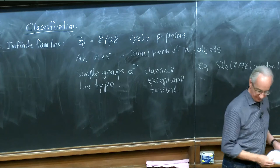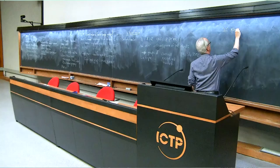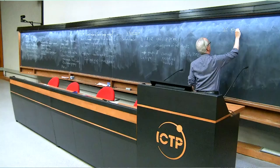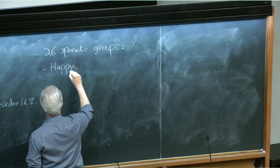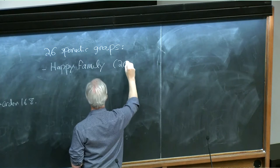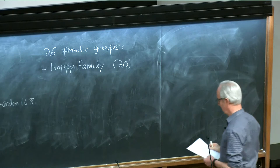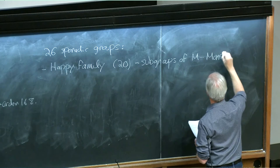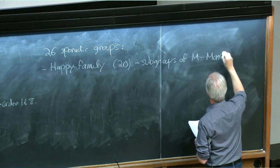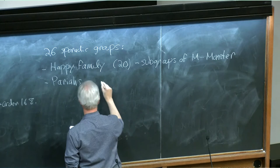And then there are 26 sporadic groups which don't fit into any of these infinite families. These 26 groups are sometimes usefully viewed as a group of 20 called the happy family — finite group theorists like funny names. These are all subgroups of M, which is the monster group, the largest sporadic group. And then there are things called the pariahs, which are not subgroups of the monster group — there are six of them.